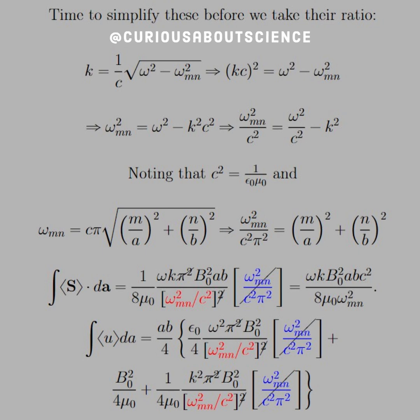What we see is that we have omega squared over c squared minus k squared in the denominator, which we can simplify to the omega squared mn over c squared. And we color coded that to red.